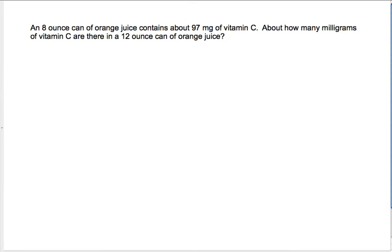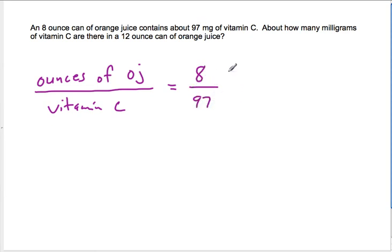Some types of problems that we can use a proportion to solve would be something like this: an 8-ounce can of orange juice contains about 97 milligrams of vitamin C. About how many milligrams of vitamin C are there in a 12-ounce can of orange juice? We can set up a proportion. It's really important to label how you're setting it up so you keep everything in the right spot. If we have ounces of OJ on the top and vitamin C on the bottom, when there's 8 ounces of OJ, we get 97 milligrams of vitamin C.